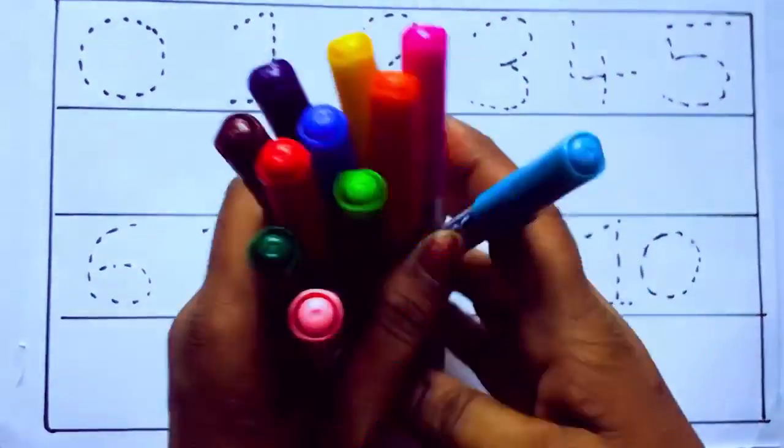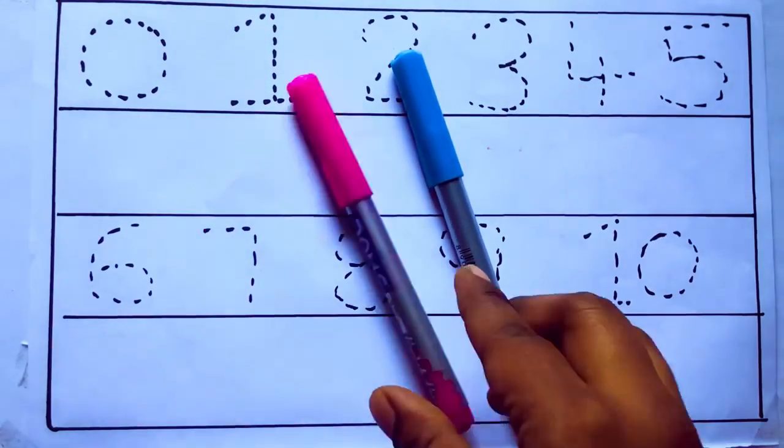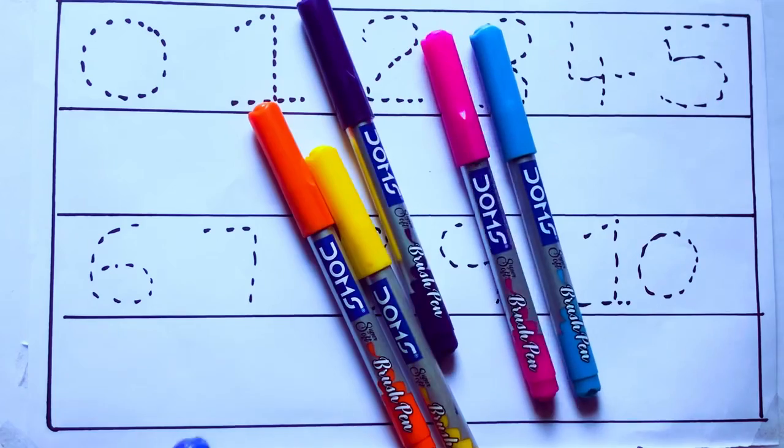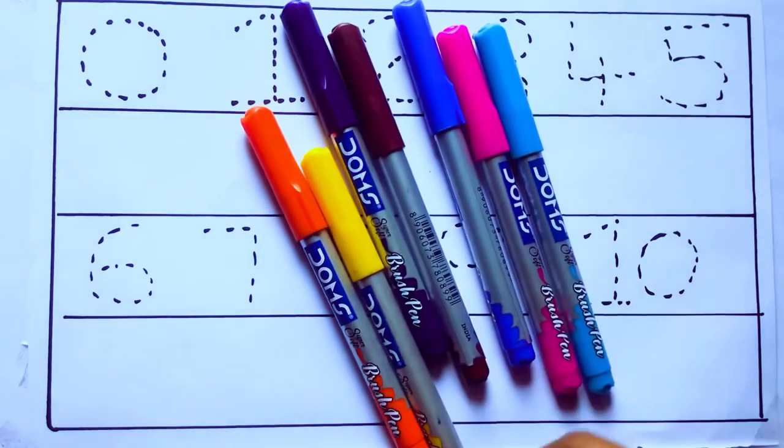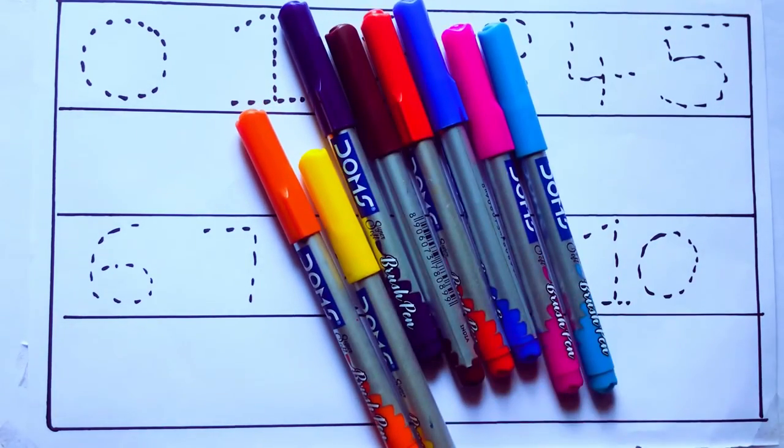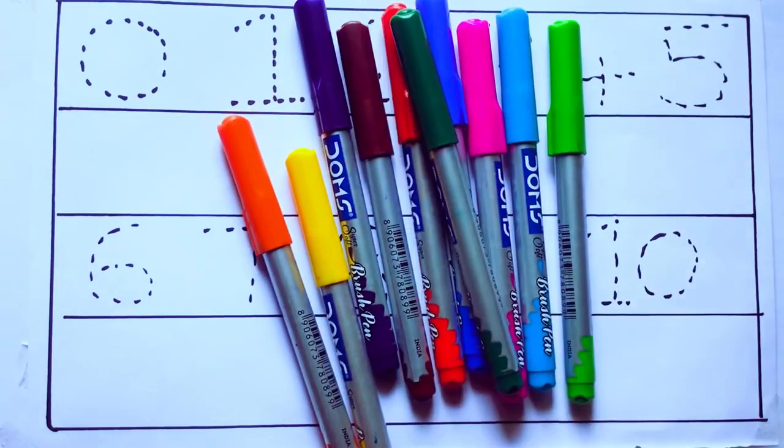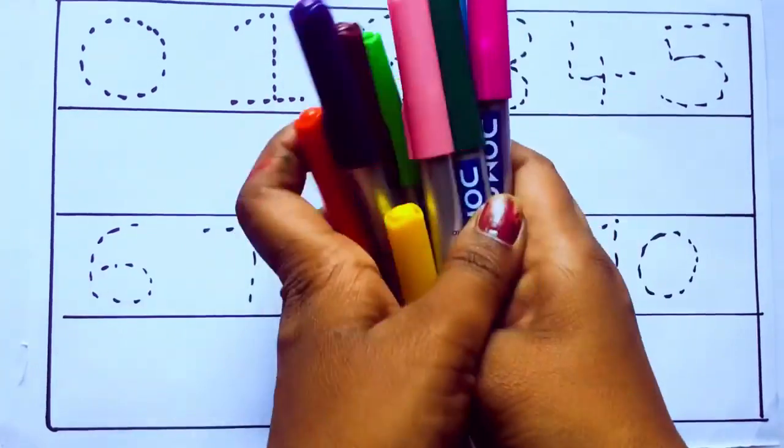Let's learn the names. Sky blue color, pink color, yellow color, orange color, violet color, blue color, brown color, red color, green color, and pink color.